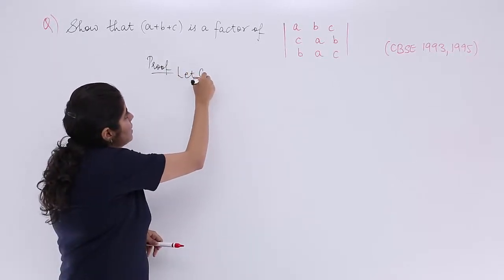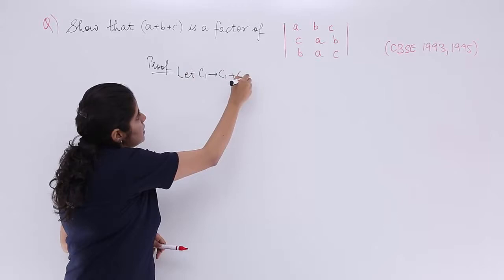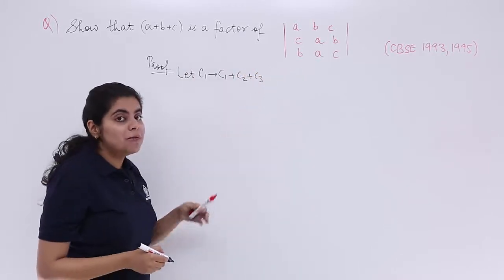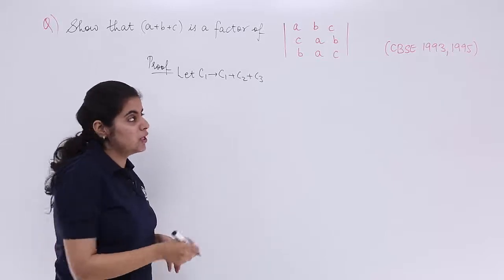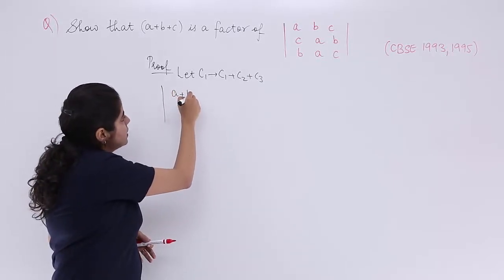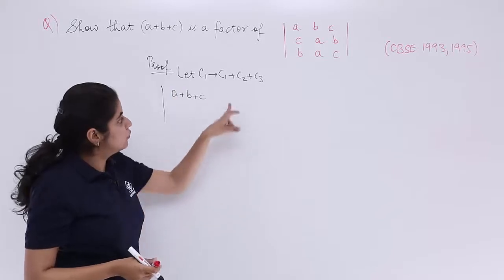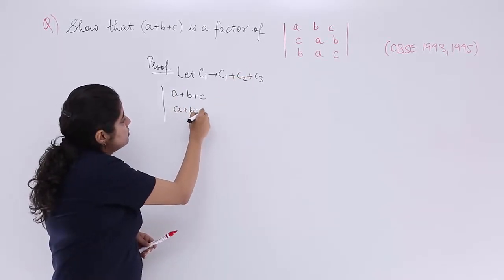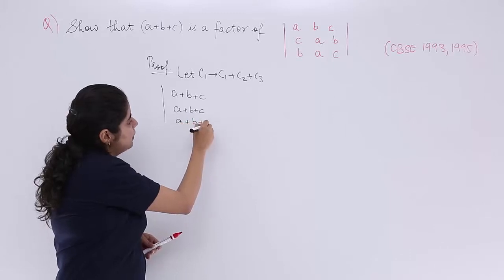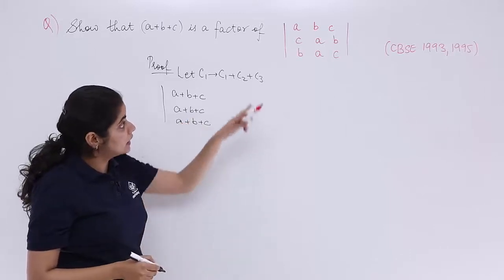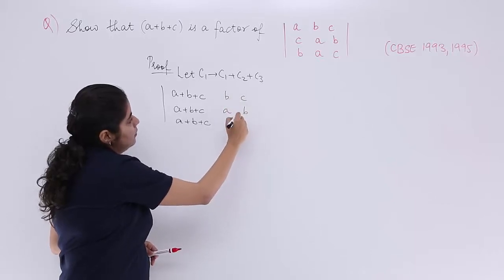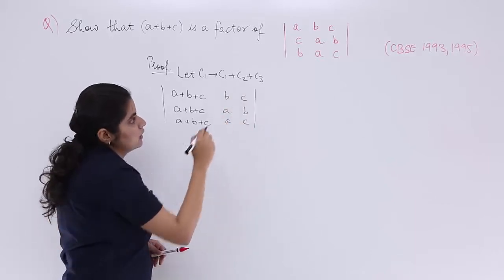So let in c1 we have c1 plus c2 plus c3. Why I am doing this? I am doing this to make things simpler for calculation. What happens is the determinant becomes a plus b plus c. The first column becomes a plus b plus c, second column also a plus b plus c. And then we have b and c, a and b, a and c. This is done.